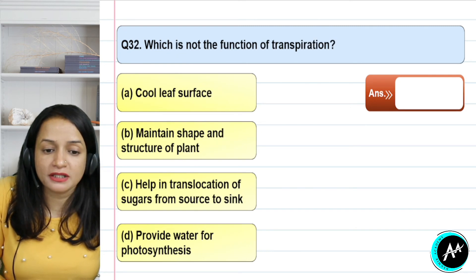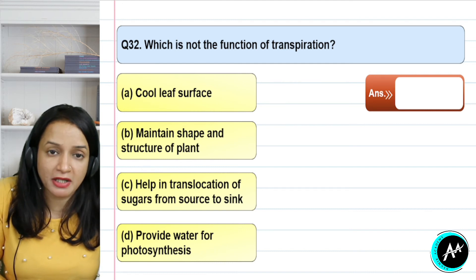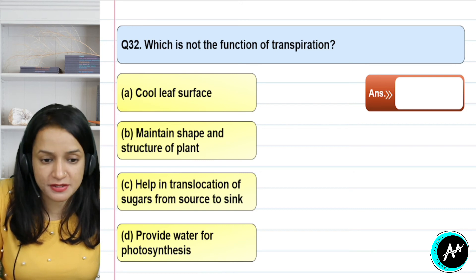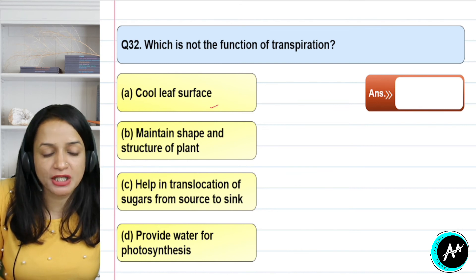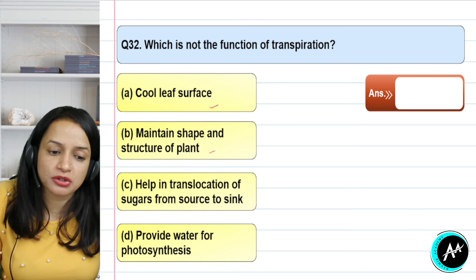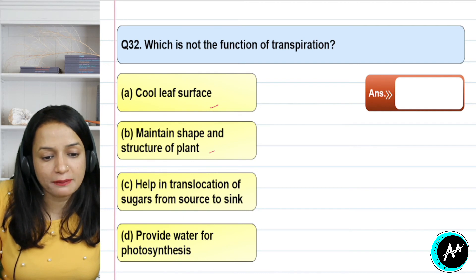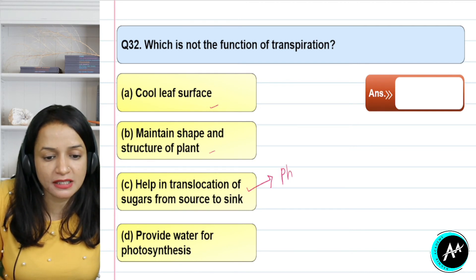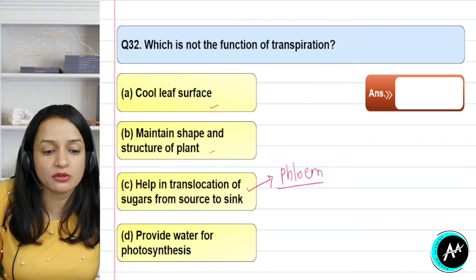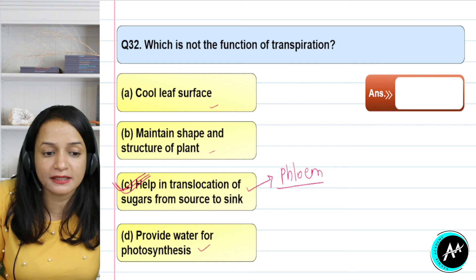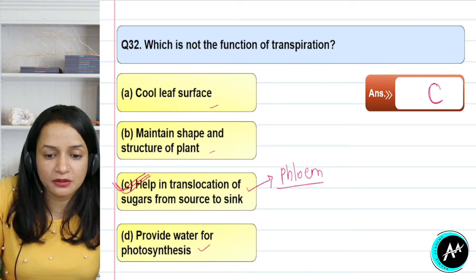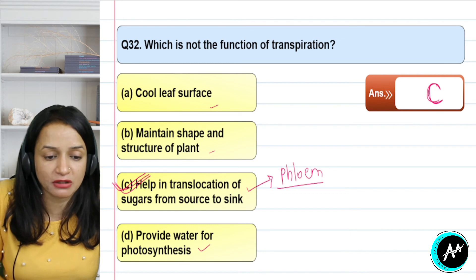Question 32: which is not a function of transpiration? Options are: cool leaf surface, maintain the shape and structure of the plant, help in translocation of sugar from source to sink, and provide water for photosynthesis. Cooling the leaf surface is a function. Maintaining shape and structure is also a function. Providing water for photosynthesis is also fine. However, translocation of sugar from source to sink is done by the phloem vascular bundle, not by transpiration. The correct answer for question 32 is option C.